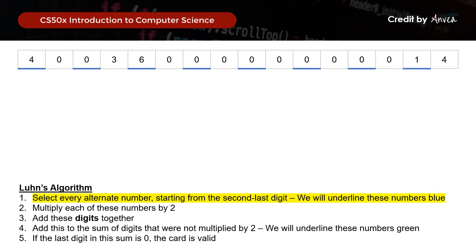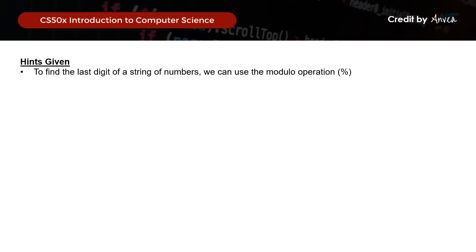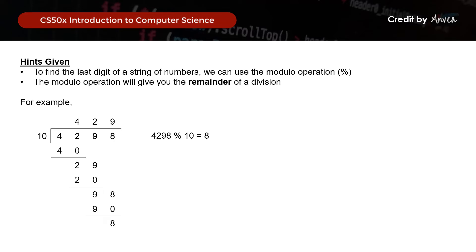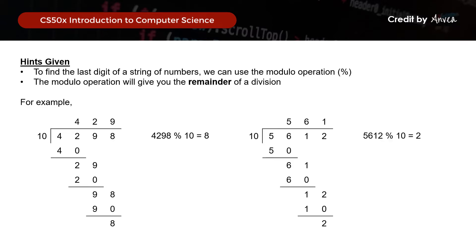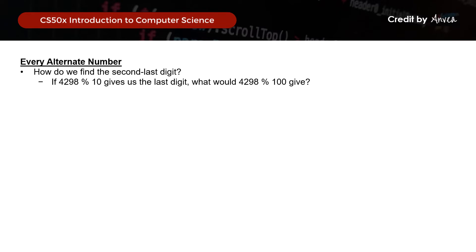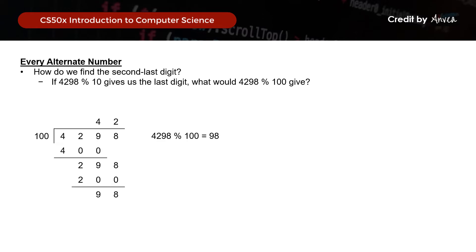So how do we do this in C? Starting with selecting every alternate number from the second last digit — these are the even-positioned digits. To find the last digit of a string of numbers, we use the modulo operation which gives us the remainder of a division. For example, 4298 modulo 10 gives us 8 — and that is how we find the last digit. To find the second last digit: 4298 modulo 100 gives us 98 (the last two digits), and then we take 98 divided by 10 to isolate the digit 9.